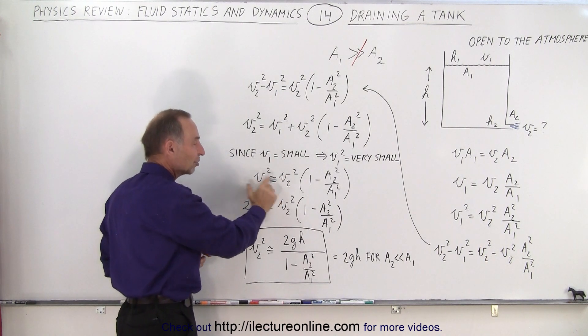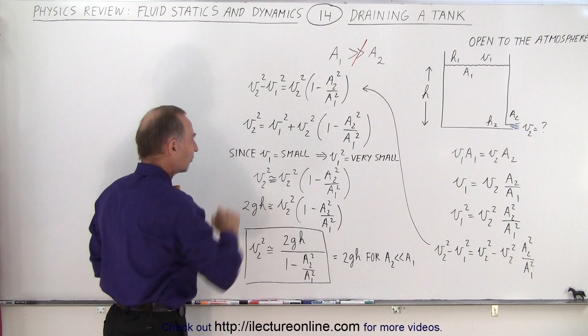And so we still have this equation which is now approximately the left side equals the right side without the v1 squared.